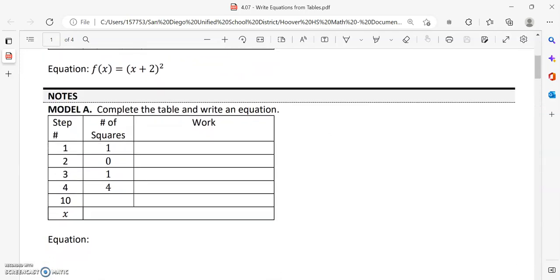So model A, complete the table and write an equation. Some of these are actually kind of challenging. The biggest thing I noticed right away is we start with a positive one, and we go to zero, and we go back up to one. So what that tells me is that I'm going to have a subtraction in here somewhere.